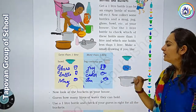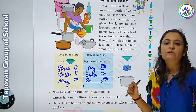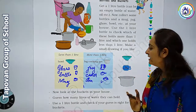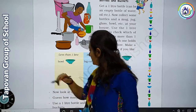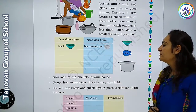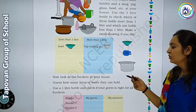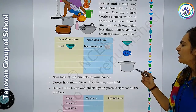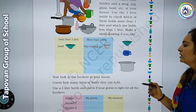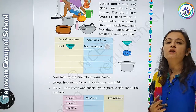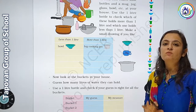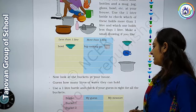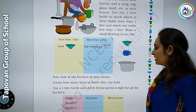You have to write two examples by yourself. Now look at the buckets in your home. You have to guess how many liters of water they can hold. Then use the one liter bottle to check if your guess is right for all the buckets.